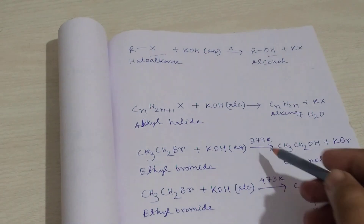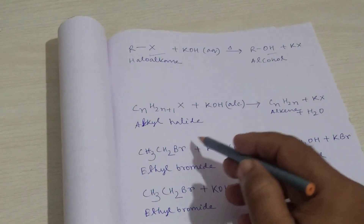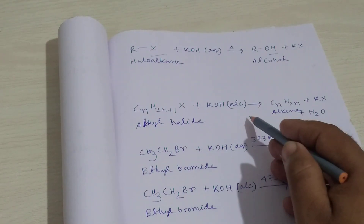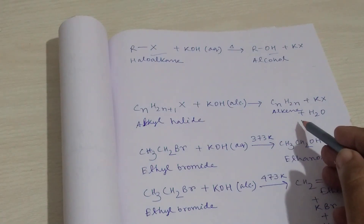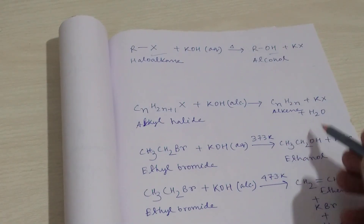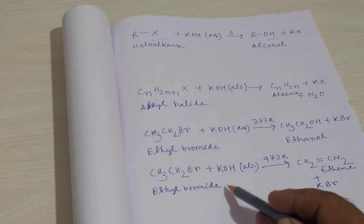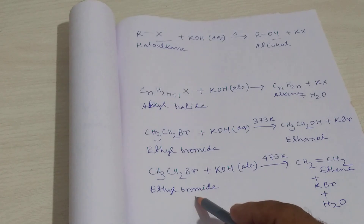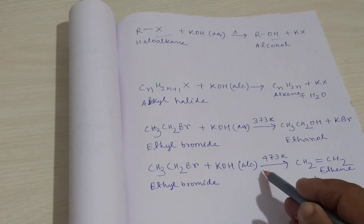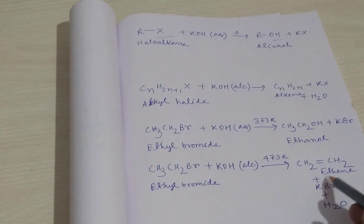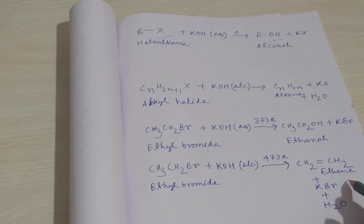In the second case, when alkyl halide reacts with alcoholic potassium hydroxide, an alkene forms. For example, ethyl bromide when reacted with alcoholic potassium hydroxide gives ethene.